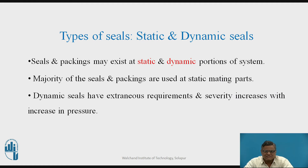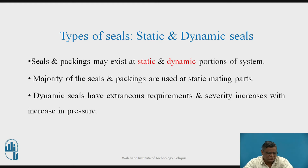Types of seals: these are static and dynamic seals. Seals and packings may exist at static or dynamic portions of the system. The majority of seals and packings are used at static mating parts. For example, the cylinder and the end cover — there is no relative movement between them, so that is called static mating parts. In the case of the cylinder and piston, dynamic portions come into picture.